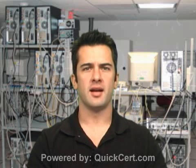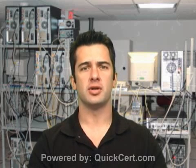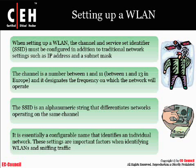When you're setting up a wireless LAN, you'll need to set up the channel and the service set identifier. You'll also have to set up all your traditional network settings, such as an IP address, subnet mask, and default gateway. You'll set a channel between 1 and 11, or between 1 and 13 in Europe, to designate the frequency on which the network will operate.